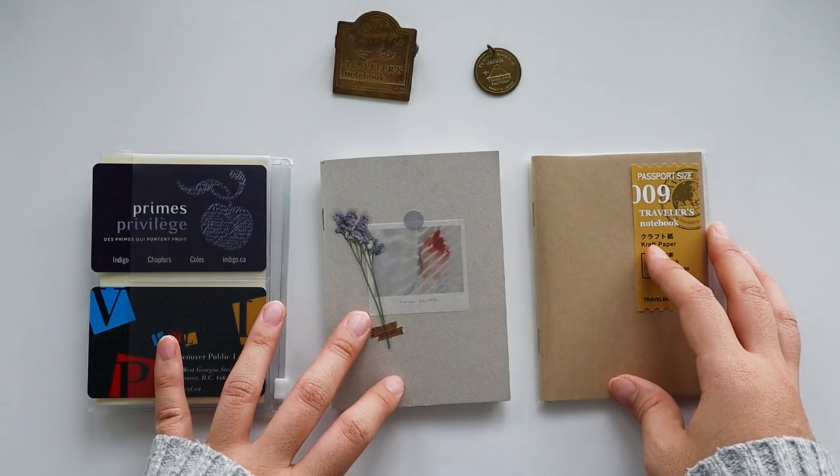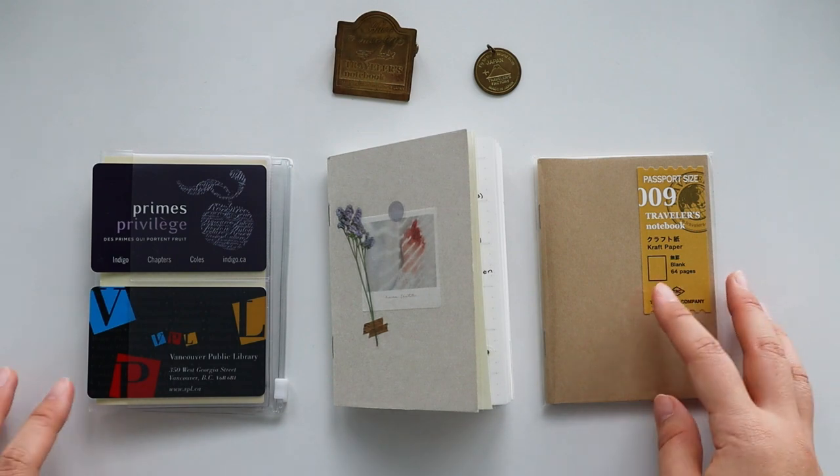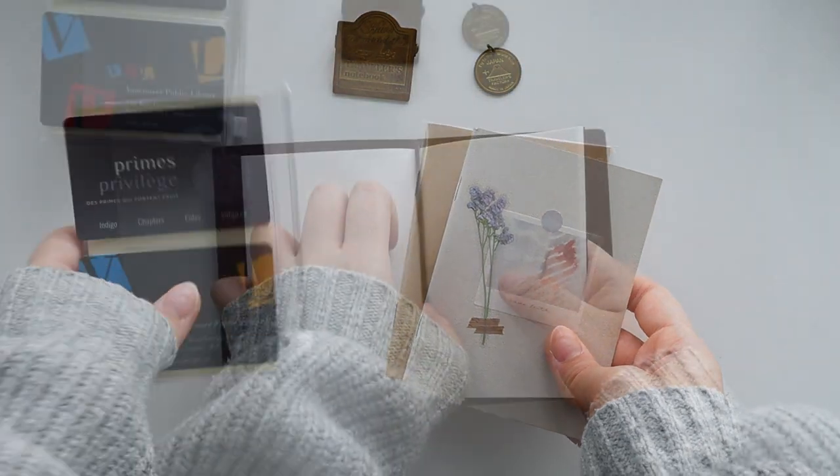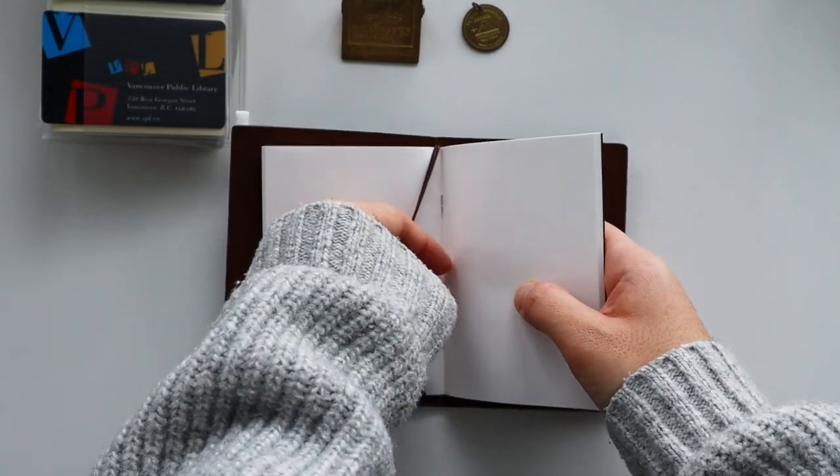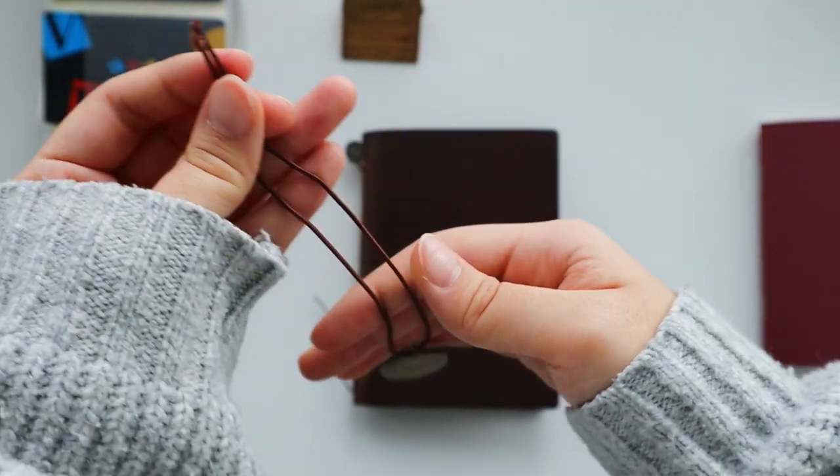And for my new passport notebook, I'm changing up my setup slightly and I'll be adding a craft paper insert. But before we get to that, I'll first remove the blank notebook that the new leather cover comes with, and I'll also add the charm onto the string.